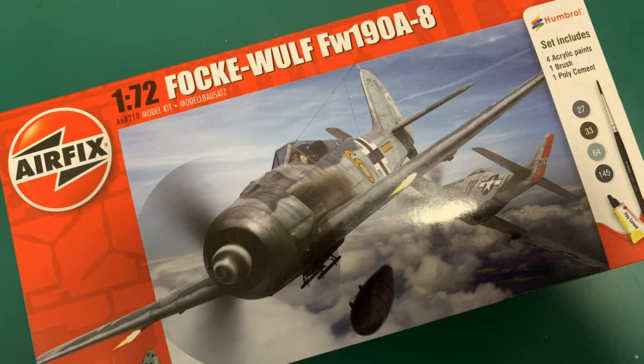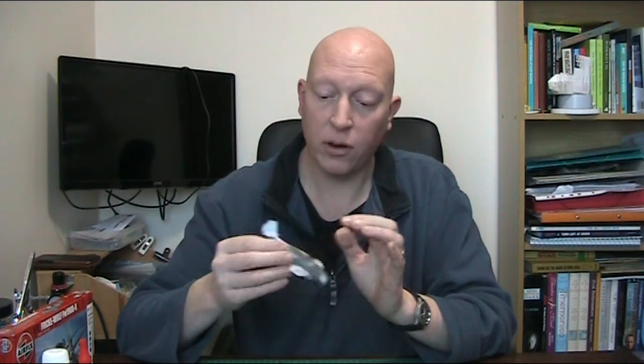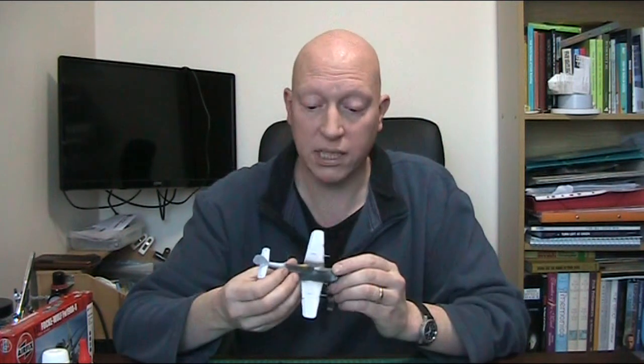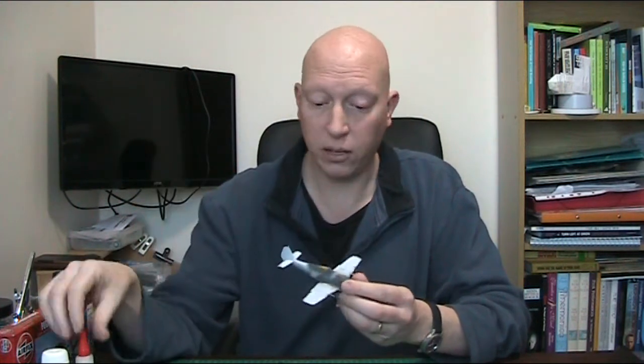Hello there and welcome to my next part of my build of AirFix's 1:72 FW190A-8. The canopy is being held in place with white tack, although the front canopy is now glued on using glue and glaze, a PVA-based glue.